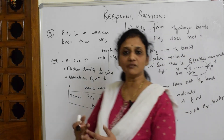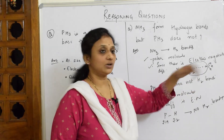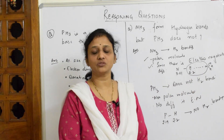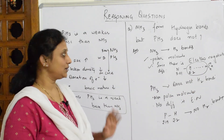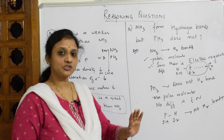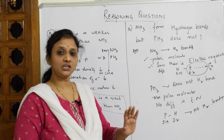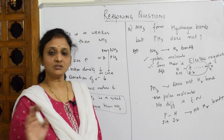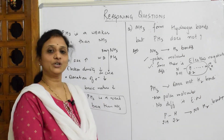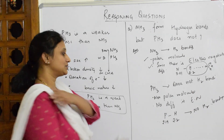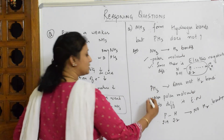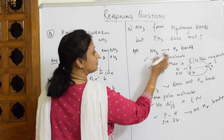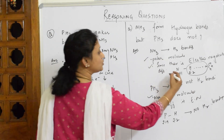Because there is no electronegativity difference, no poles are created. If there are no poles, how will it attach to the next adjacent electronegative element? Simple: electronegativity difference → polar nature → presence of hydrogen bonding. That is how you write the answer — three keywords: one, two, and three.